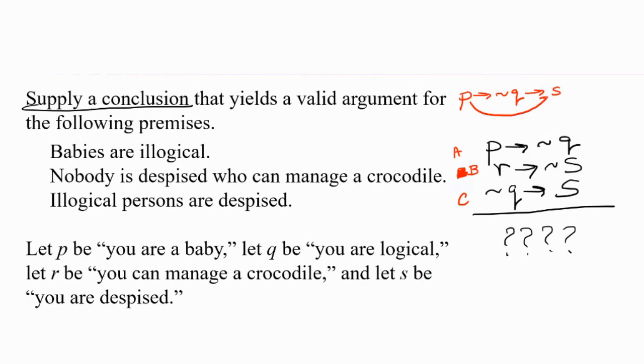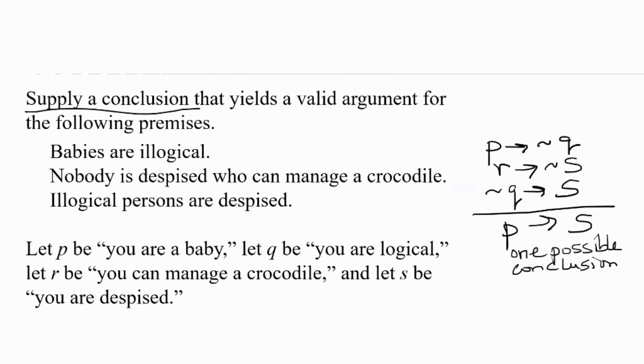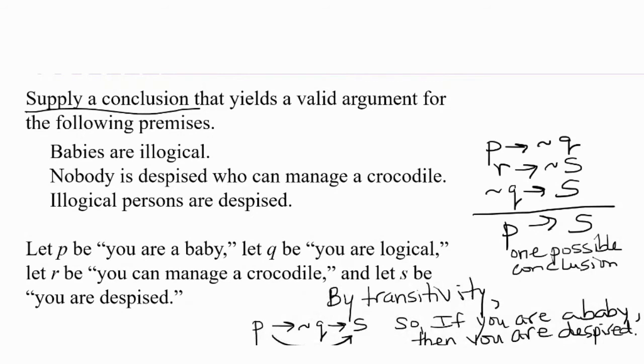So that means P implies S is a valid conclusion. It only uses two of the premises, but that's okay. We didn't say you had to use all of them. So P implies S is one possible conclusion. And what would that be in words? Very good. If you're a baby, then you're despised. But that's not the only possible conclusion.